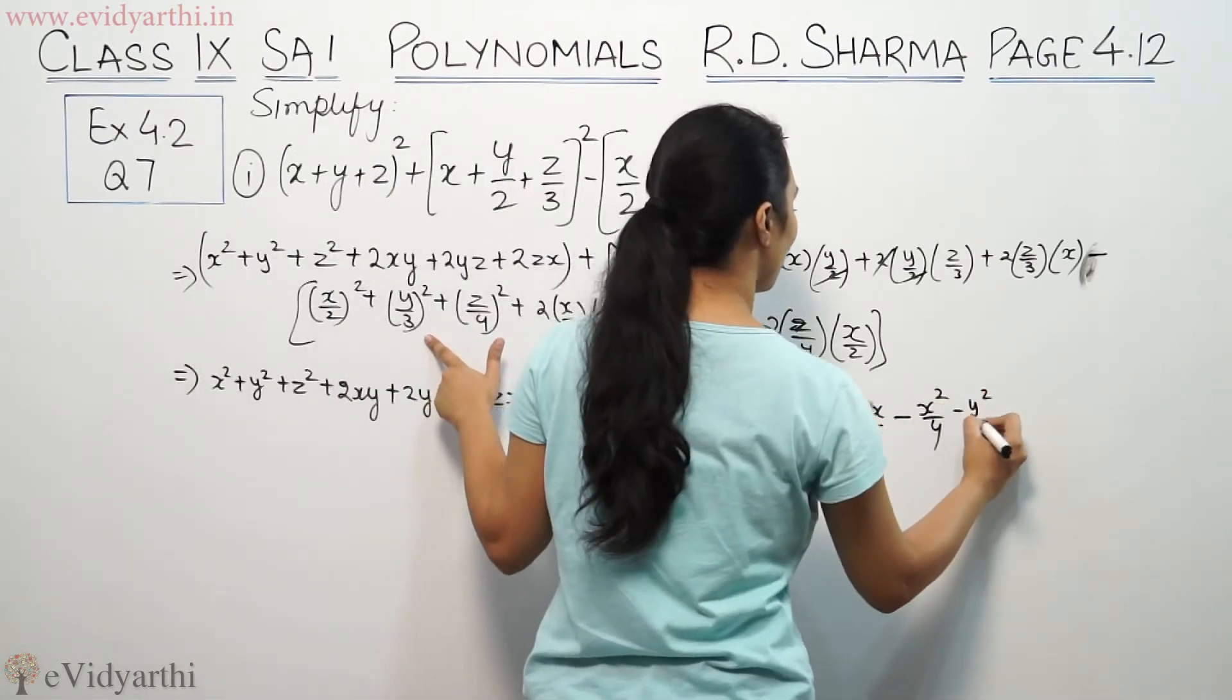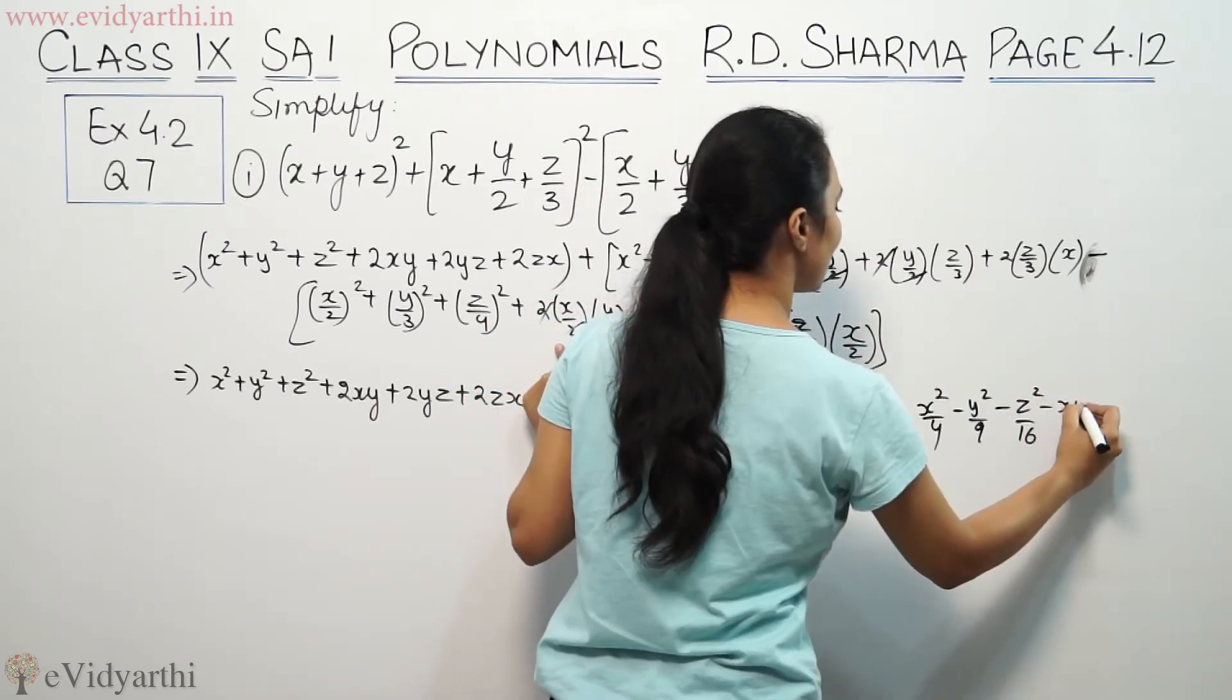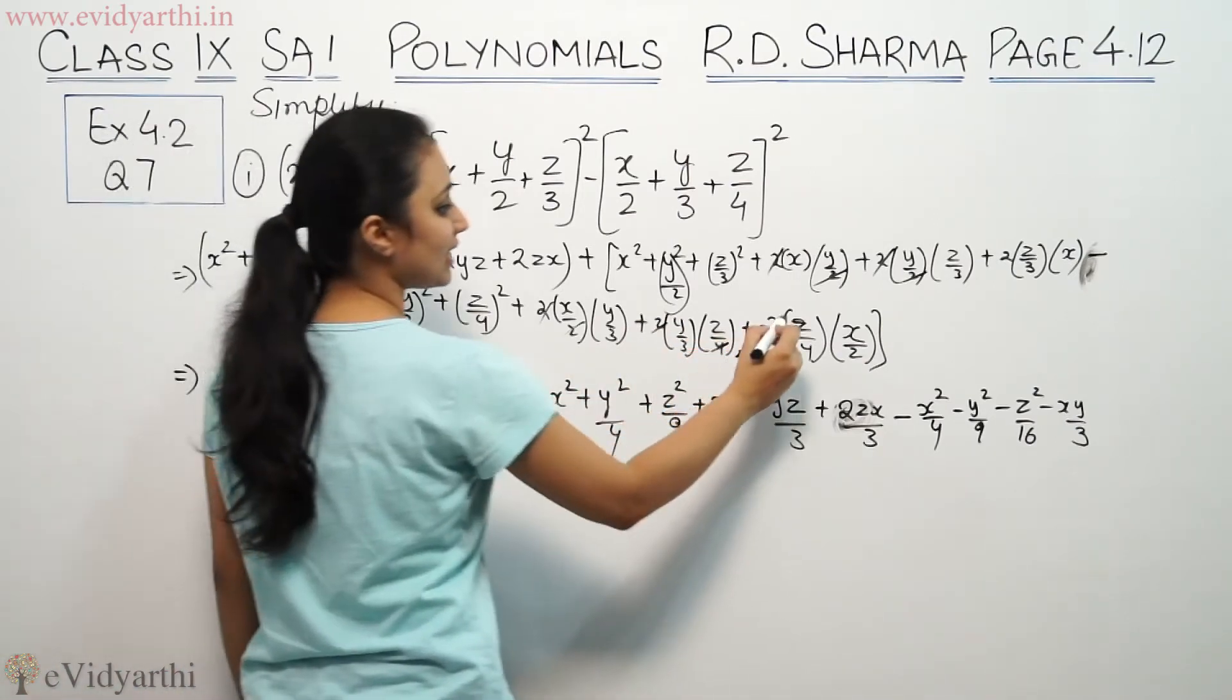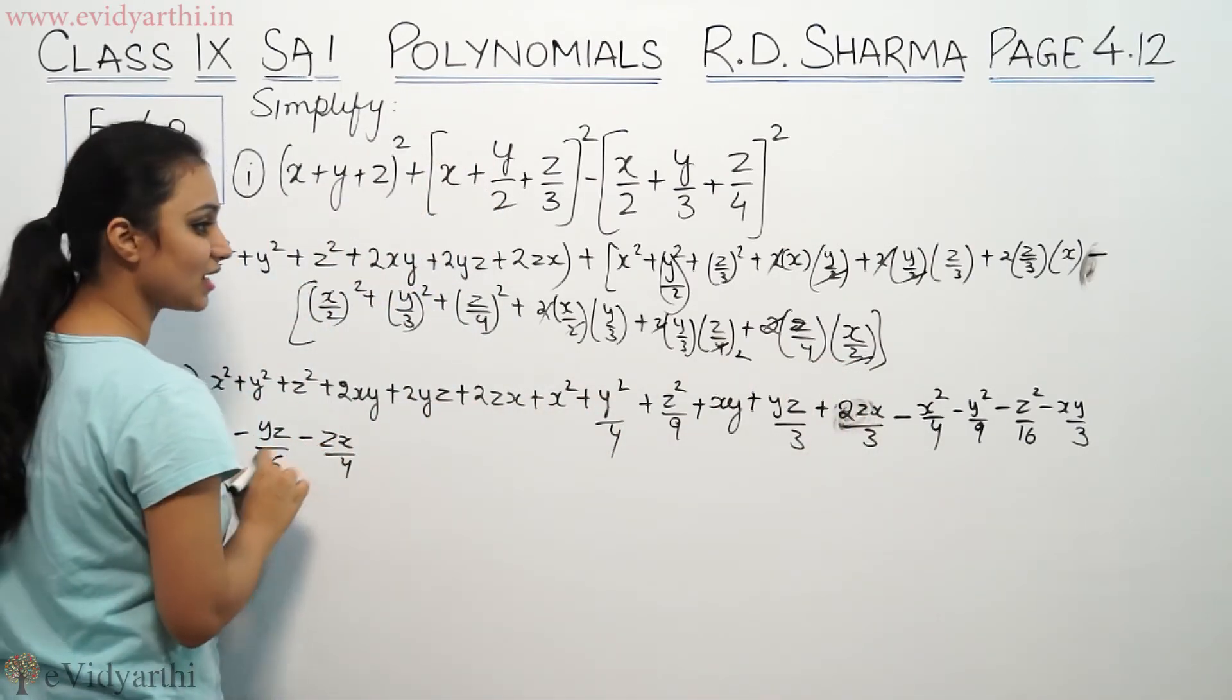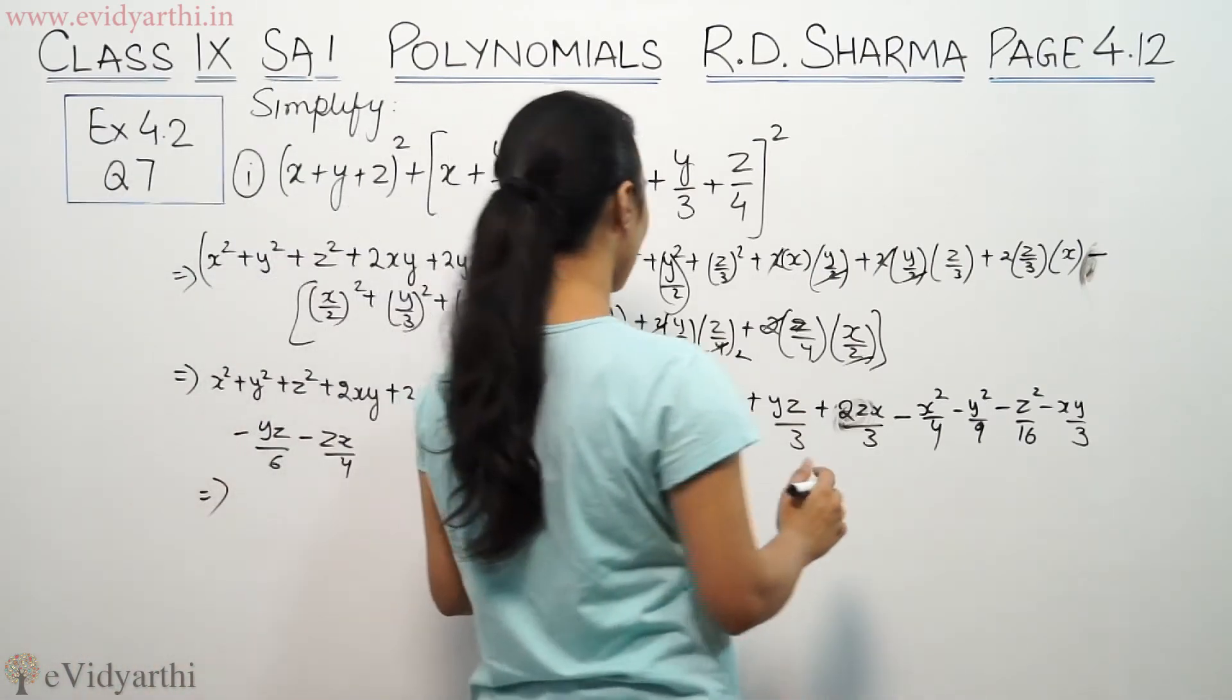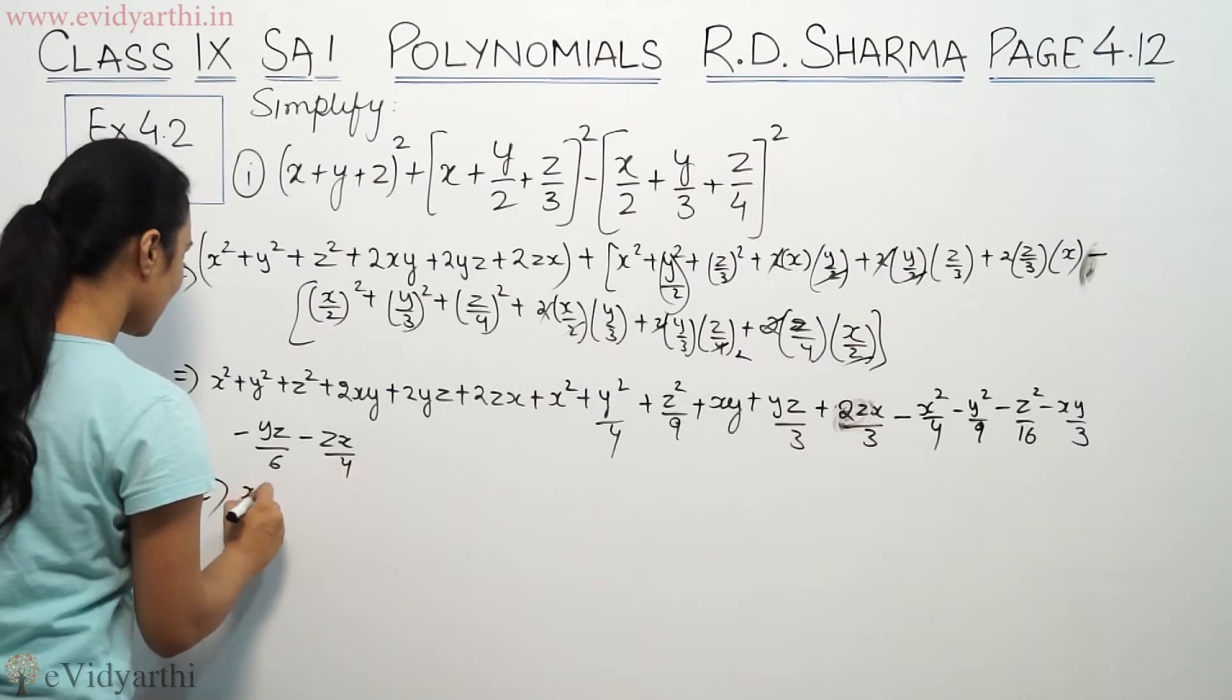Continuing: -xy/3-yz/6-zx/4. Now we'll collect the same terms together. We have x², x², and -x²/4 as x² terms.